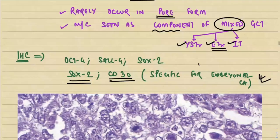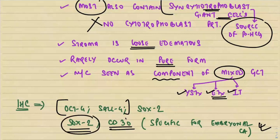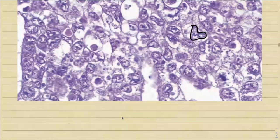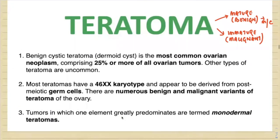Looking at the markers: OCT4, SAL4, and SOX2 are positive, but among them SOX2 and CD30 are the most specific markers for embryonal carcinoma.